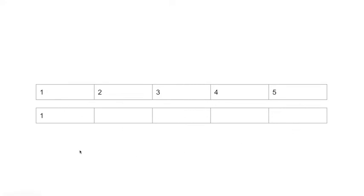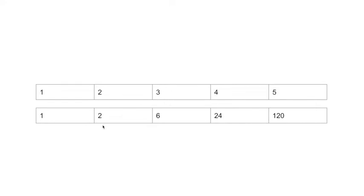Now let's create this table, starting with the pre. At the first index there's nothing before it, so we set it to 1. For 2, the product of everything before it is 2 times 1 equals 2. Then 3 times 2 is 6, 4 times 6 is 24, and 5 times 24 is 120. So we've built our pre-product table — at every index it holds the cumulative product of everything before it, multiplied by the current value.